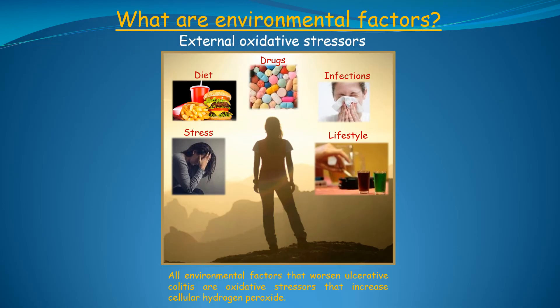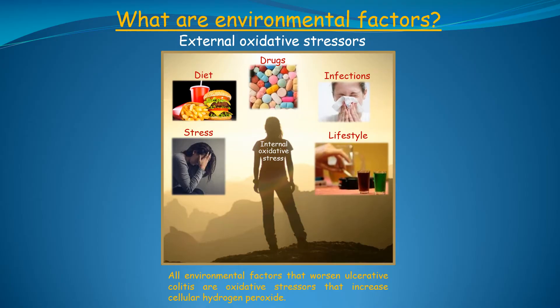Other oxidative stressors, such as certain metabolites and metabolic reactions that generate hydrogen peroxide, are internal or inside the body and are called internal oxidative stressors. In summary, why people develop ulcerative colitis is no mystery — you are simply being exposed to oxidative stressors that cause your body to produce more hydrogen peroxide than you can handle. Part of the treatment is minimizing exposure to oxidative stress.